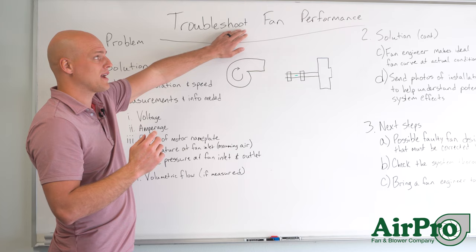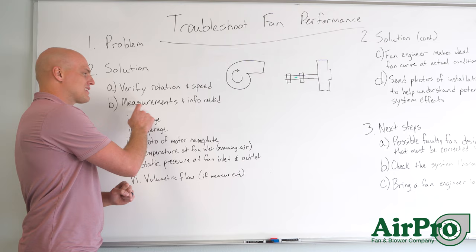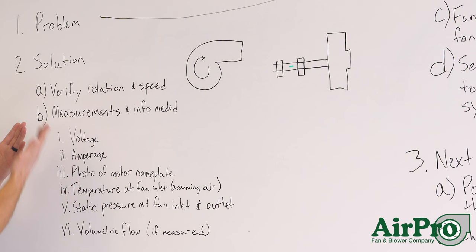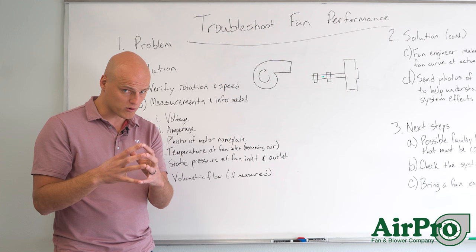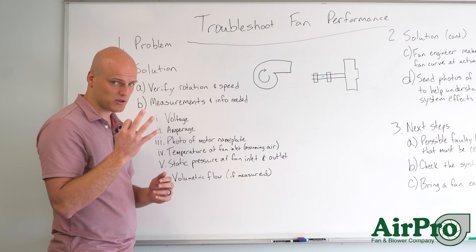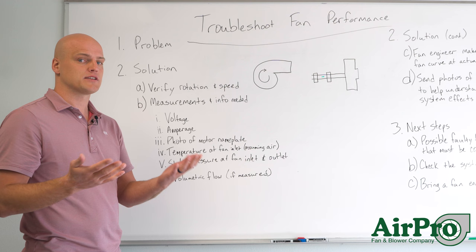If you've verified rotation is good and speed is accurate but you're still having a problem, we move on. These are the measurements and information most commonly needed. The horsepower being consumed from the motor does not lie — we love getting horsepower information. We ask for voltage input to the motor, amperage off the three legs on a three-phase motor, and a photo of your motor nameplate. We use these three bits of information in a calculation to figure out your motor horsepower, and we're going to relate that to the fan curve.